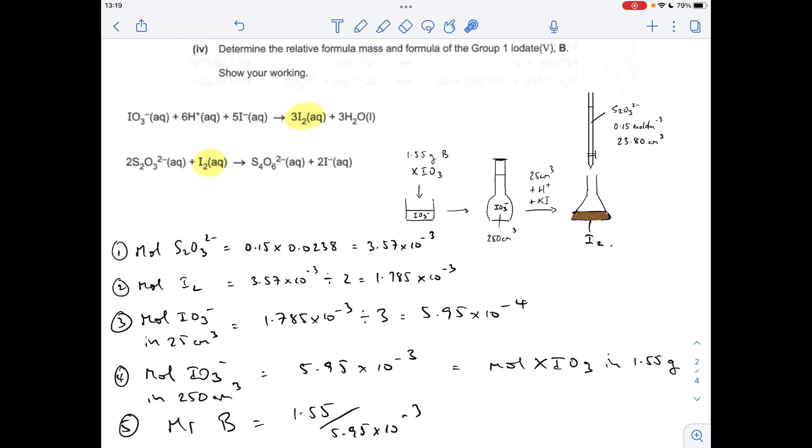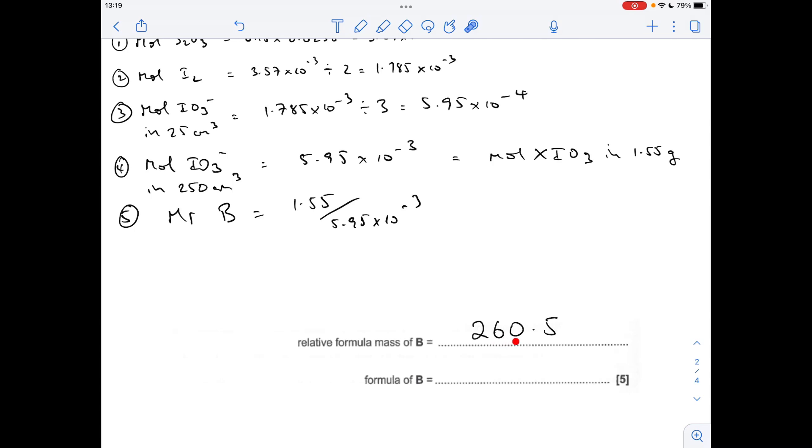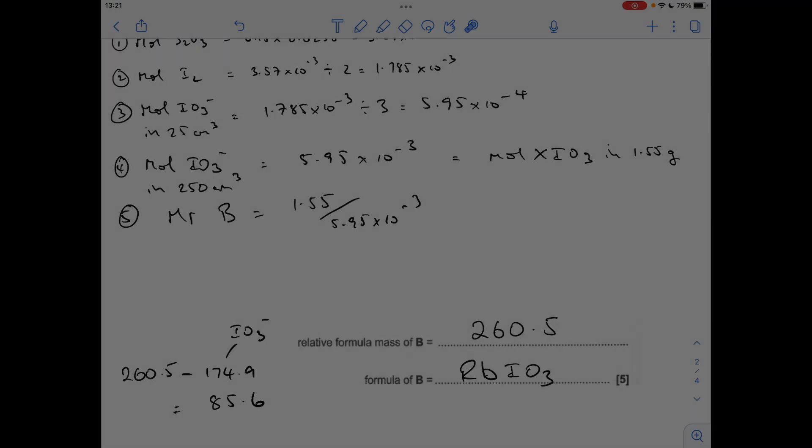From that we can calculate the Mr of B: mass over moles, which gives 260.5. Now we subtract the Mr of IO₃⁻ from that, which gives us the Mr of X. Then we can go to Group 1 and find out what it is. When you take the Mr of IO₃⁻ away from the Mr of B, you get 85.6, which means that B is RbIO₃, rubidium iodate.